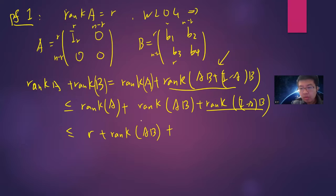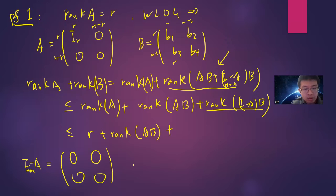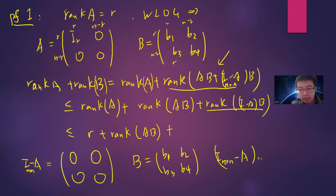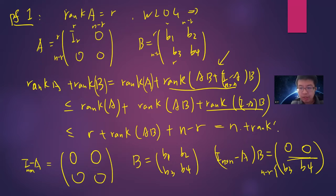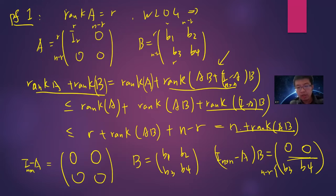Now, I − A is the n-by-n identity minus A, which gives a block matrix of zeros in the top-left. If I compute (I − A)B with B = [B1, B2; B3, B4], I get [0, 0; B3, B4]. This block has size (n−r), so the rank of (I−A)B is at most n − r. Therefore rank(A) + rank(B) ≤ rank(AB) + (n − r) + r... wait, it's just rank(AB) + n − r, and so rank(A) + rank(B) ≤ n + rank(AB).